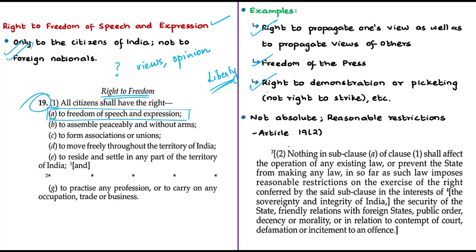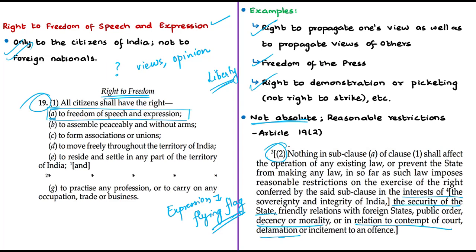For example, the right to fly the national flag with respect and dignity is an expression of allegiance and pride for the nation. Voting can also legitimately be regarded as a form of expression. However, this right to speech and expression is not absolute. The constitution allows the government to limit freedom of expression in the interests of sovereignty and integrity of India, security of the state, or based on decency or morality. It also limits freedom in relation to contempt of court and defamation — given under Article 19(2). The First Amendment Act of 1951 added three more grounds: friendly relations with foreign states, public order, and incitement to an offense.